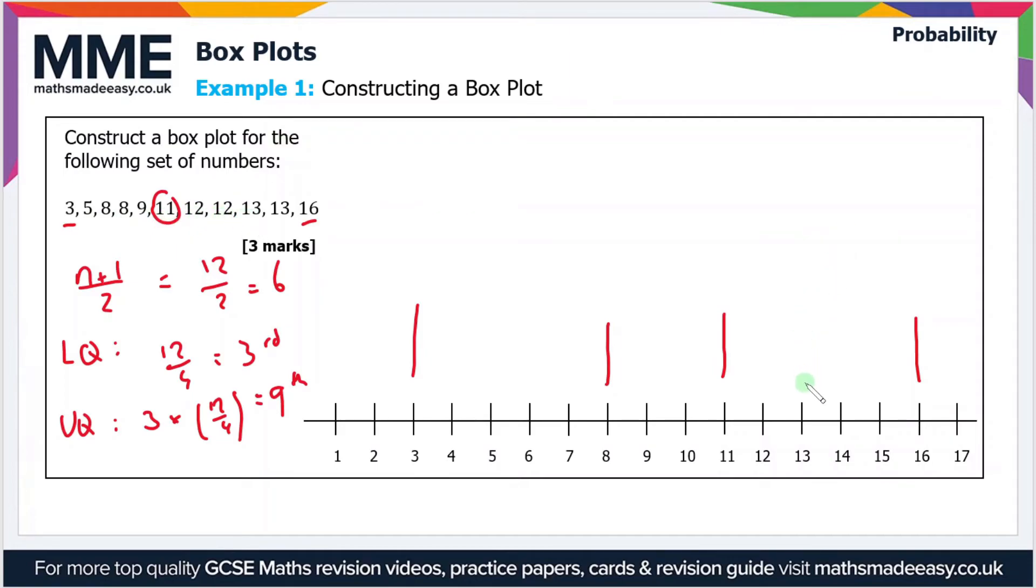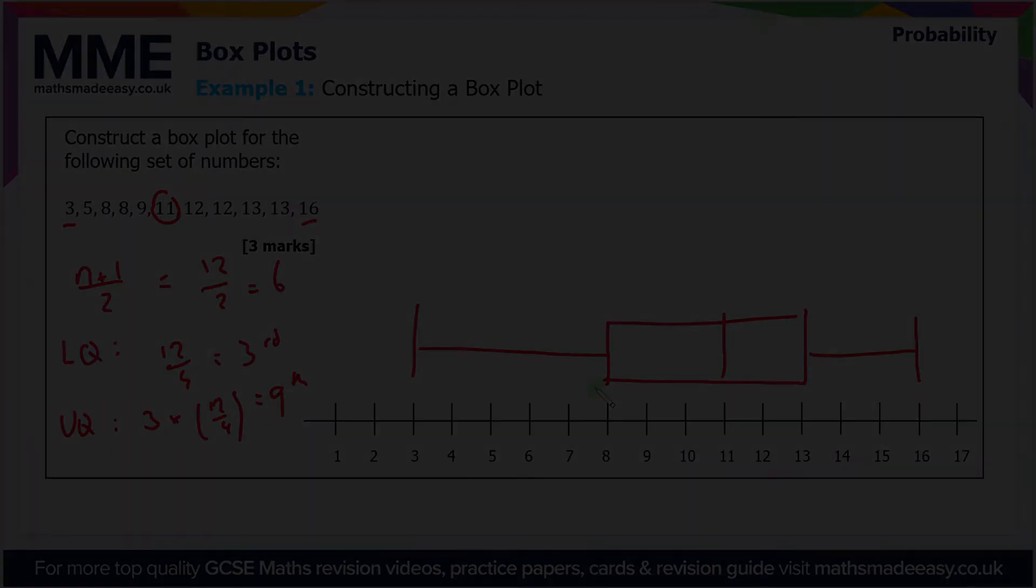So all that's left now is to connect up the box plot to form a box and whisker plot. So there's the box, and the whiskers are the two upper and lower values.